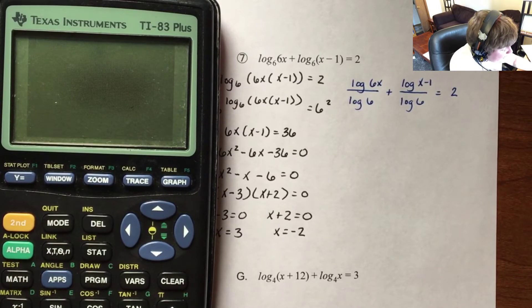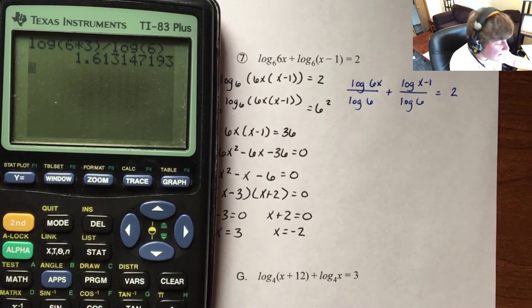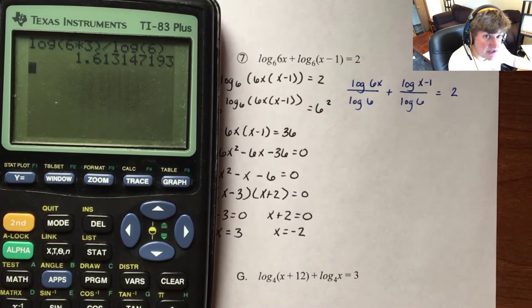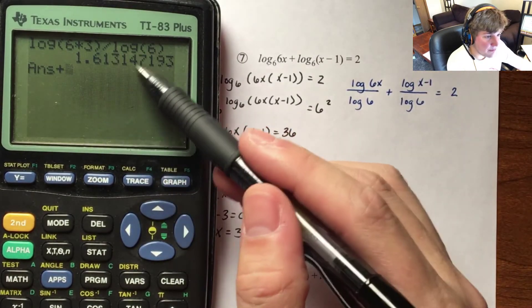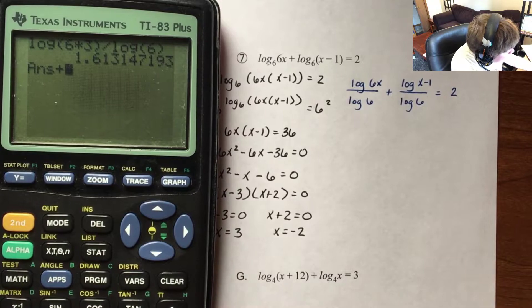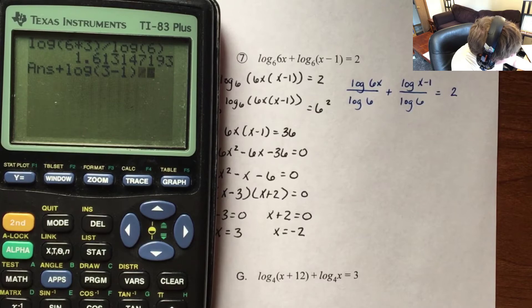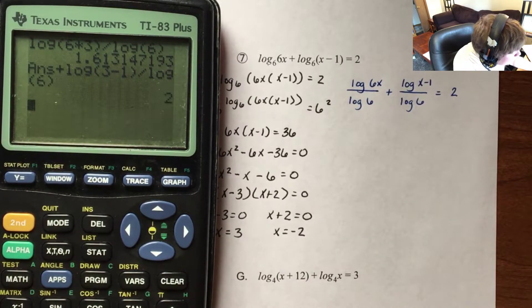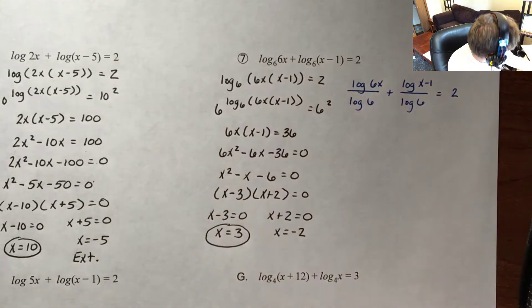I'm going to do x equals 3 first. I have log base 10 of 6 times 3 divided by log base 10 of 6. I'll keep that in my calculator and hit the plus sign — it will automatically use my previous answer, so I'm not rounding. Then I add log base 10 of 3 minus 1 divided by log base 10 of 6. That is all equal to 2. The calculator confirms that x equals 3 is an actual solution.